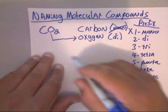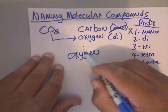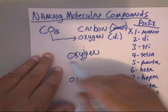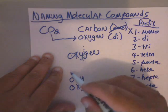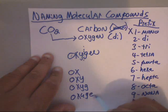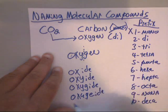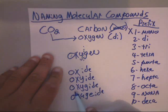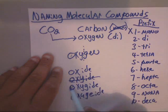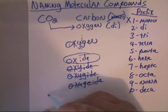Oxygen has to end in -ide. To figure that out, find the middle of the word oxygen — o-x-y-g-e-n. Split it and write down the stem options: oxy, oxyg, oxyge — then add -ide to each and pick the one that sounds best. You get oxi, oxygide, and oxide. Out of all those, oxide sounds the best.